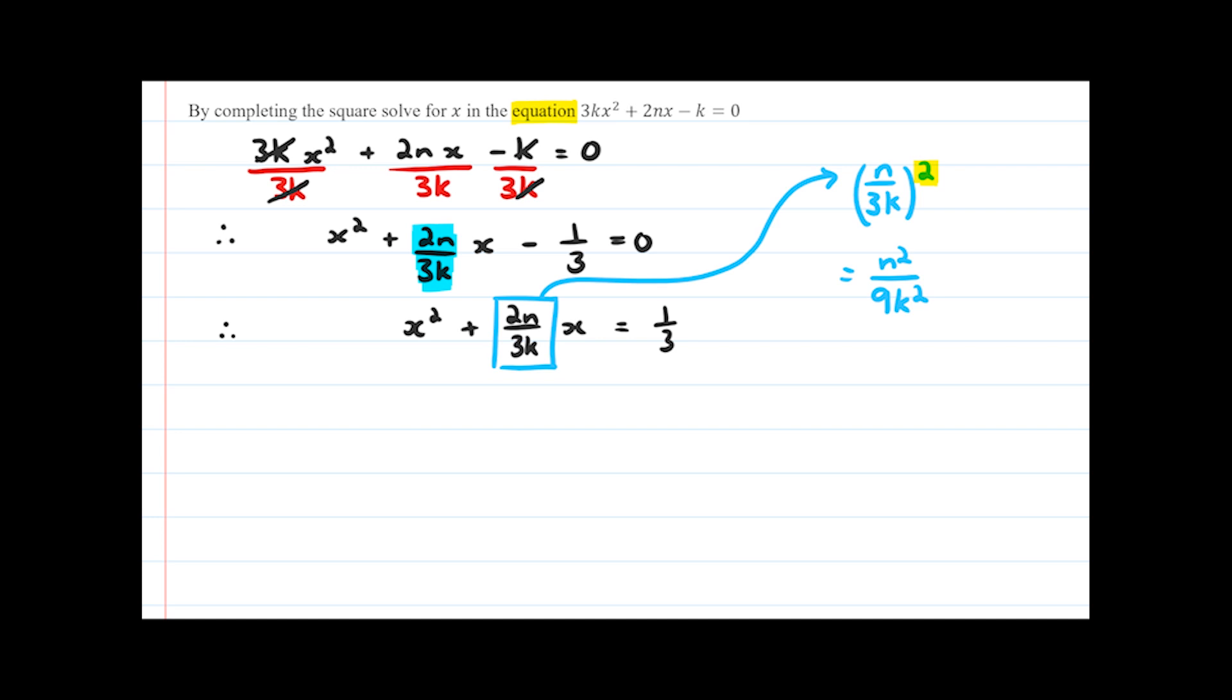Now we can go ahead and add that to both sides of our equation. So we'll have x² + (2n/3k)x + n²/9k² = 1/3 + n²/9k². And I hope you can already see that on this side here we're going to have to do some neatening up later on, so the algebra will come in in the next few steps. But before we get there, let's think about how to factorize this side over here into a perfect square.